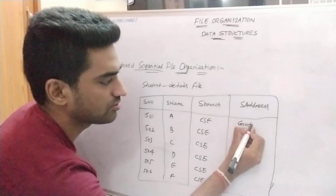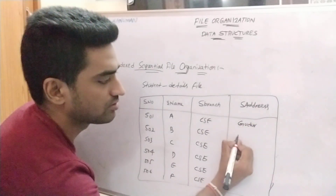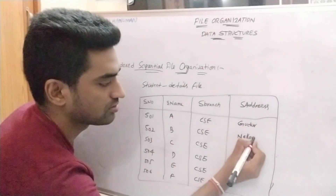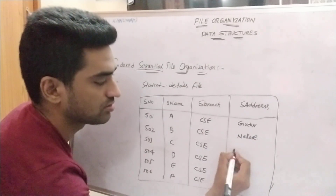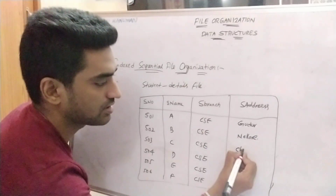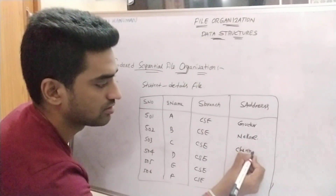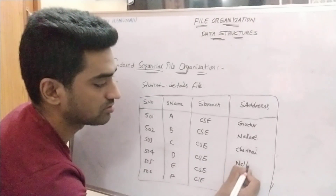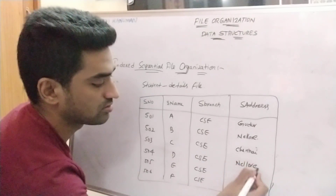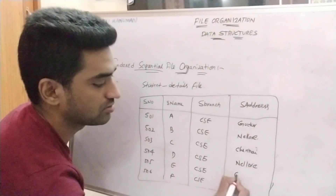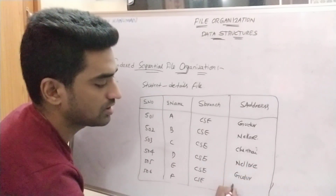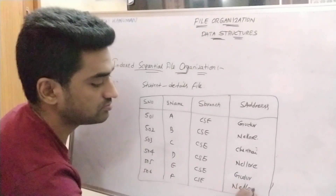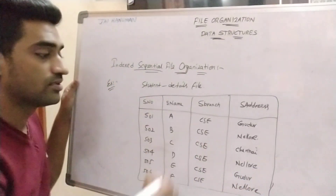So here — Gudur, Nellur, Chennai, Nellur, Gudur, Nellur. This is the sequential file data showing student records organized by location.